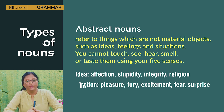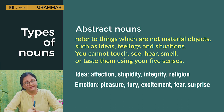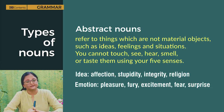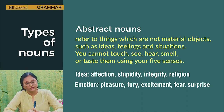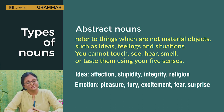We also have abstract nouns. They refer to things which are not material objects, such as ideas, feelings, and situations. You cannot touch, see, hear, smell or taste them using your five senses. Ideas: affection, stupidity, integrity, religion. Emotions: pleasure, fury, anger, excitement, fear, surprise.